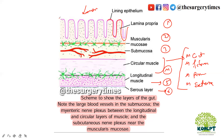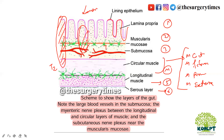So if tumor involvement is up to the muscle or muscularis propria, then it will come under T2. Up to the submucosa it will come as T1. Just briefly I am telling this so we can remember easily, and we will discuss in detail in the next slide.